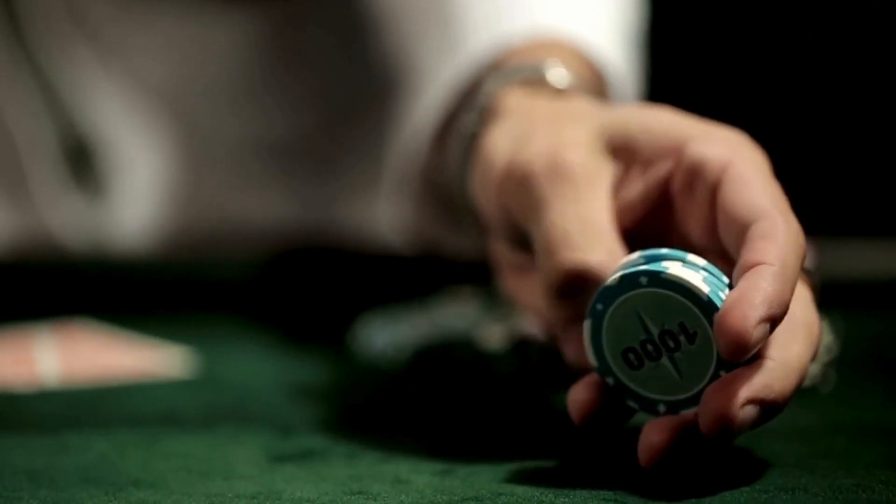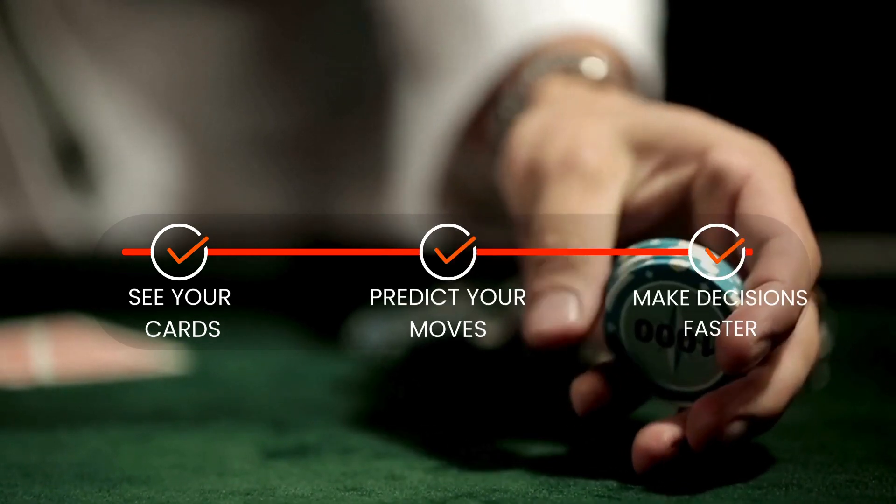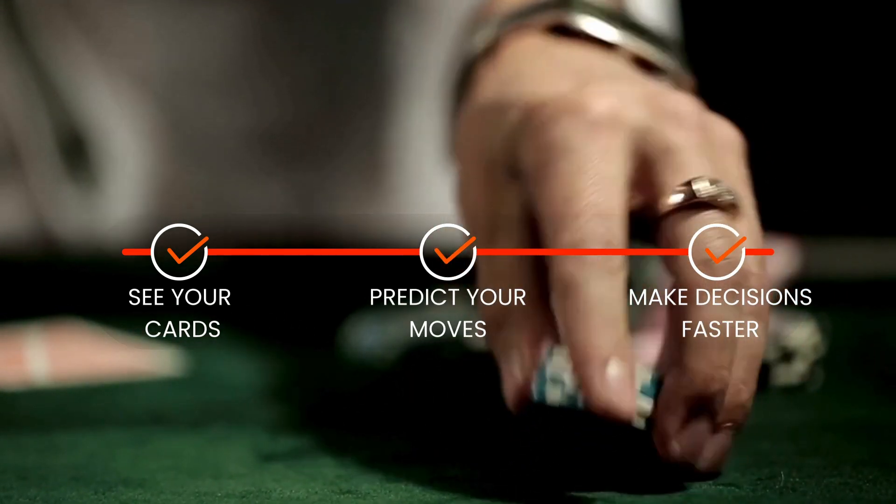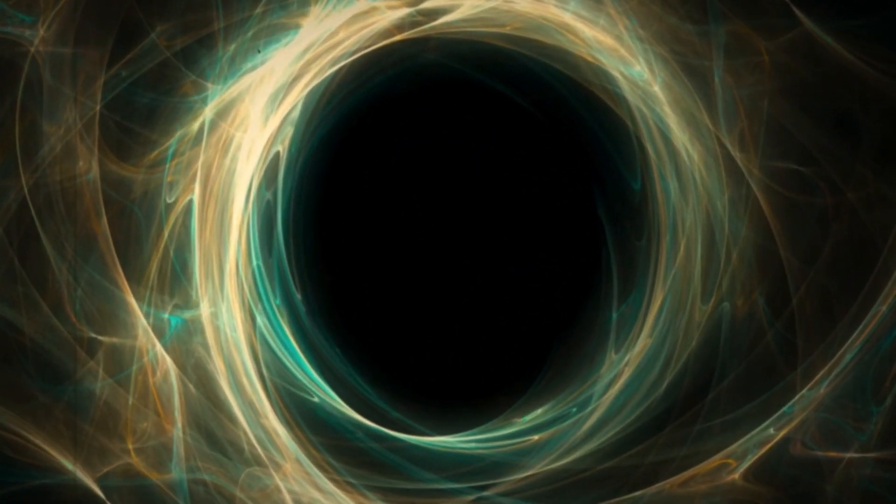Think about it. Would you play poker against an opponent who could see your cards, predict your moves, and make decisions a thousand times faster than you? Because that's basically what's happening in today's market. Let me show you how deep this rabbit hole goes.